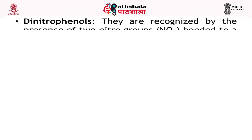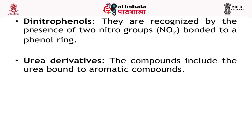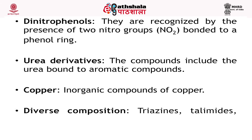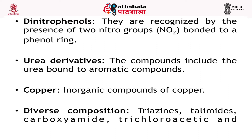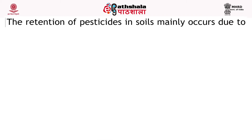Dinitrophenols are recognized by the presence of two nitro groups bonded to a phenol ring. Urea derivatives include urea bound to aromatic compounds. Copper compounds are inorganic compounds of copper. Also triazines, carboximides, trichloroacetic and trichloropicolinic acid derivatives are some examples of pesticides based on chemical composition. Next is pesticide retention in soil.